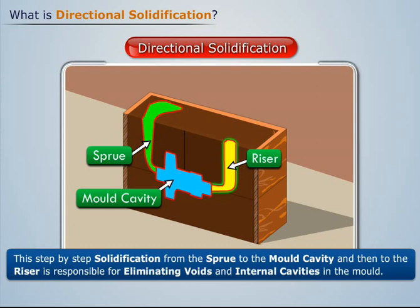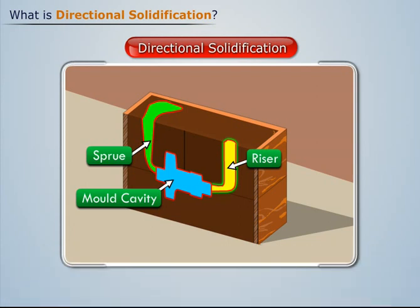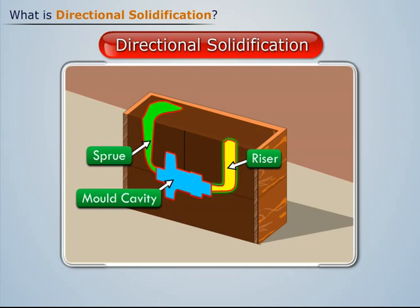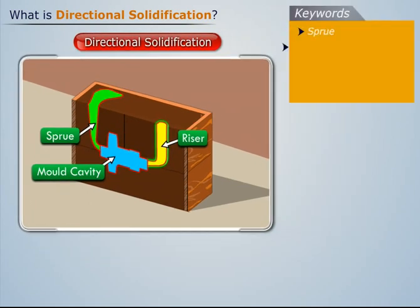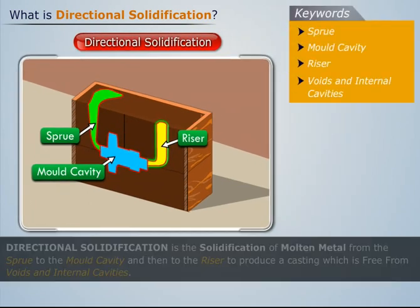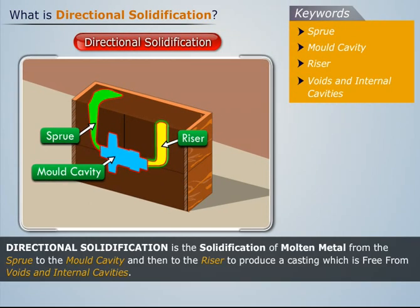Such a step-by-step solidification process is known as directional solidification. Thus, directional solidification is the solidification of molten metal from the sprue to the mold cavity and then to the riser, to produce a casting which is free from voids and internal cavities.